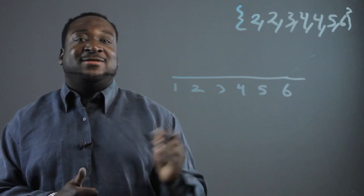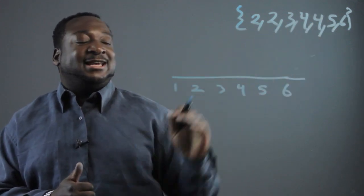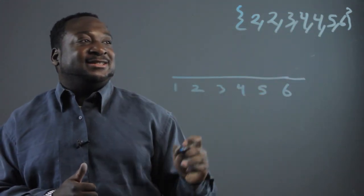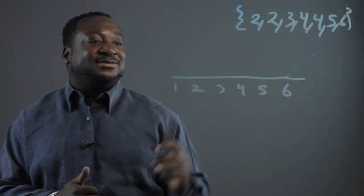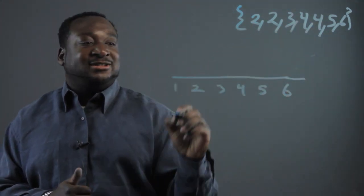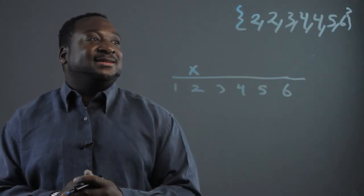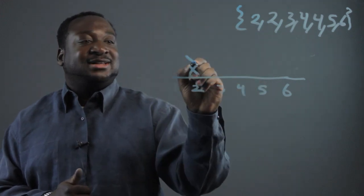Now all we're going to do is go through the set and put an X every time we see the numbers. First we have two, put an X, another two, put an X.